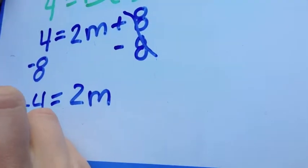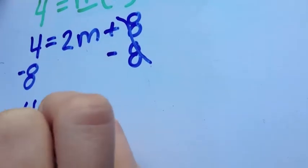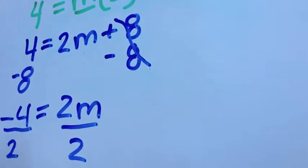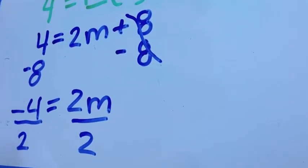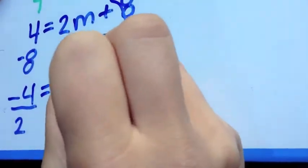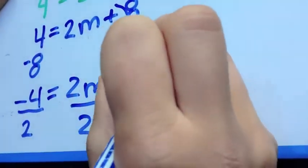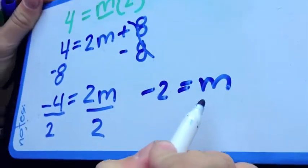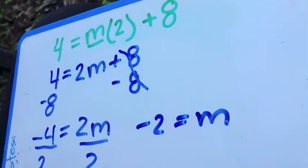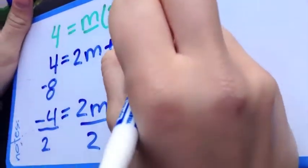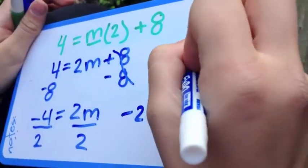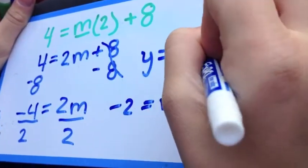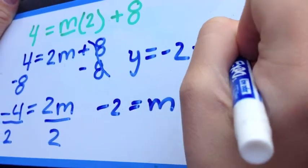Exactly! Negative 4 equals 2m. And then you divide both sides by 2. Good! Divide by 2, divide by 2. Do you know what a negative 4 divided by 2 is? A negative 2. So this negative 2 equals m. Now you have your m. You can plug it back in now. Y equals negative 2x plus 8.